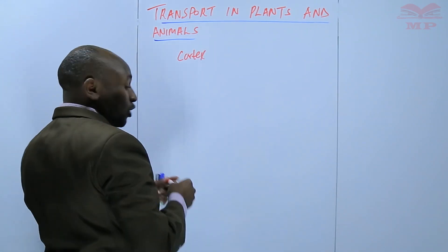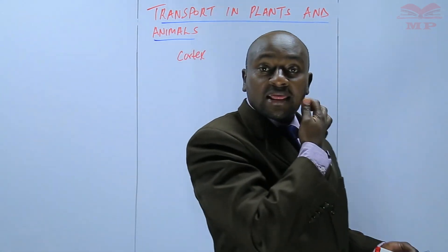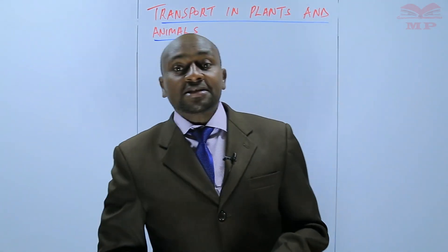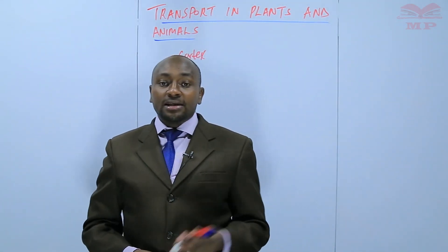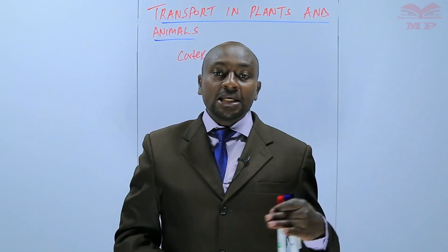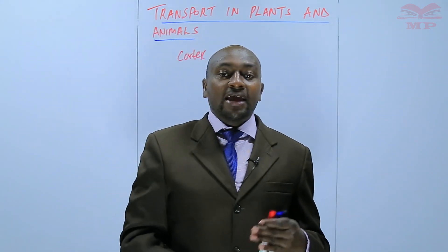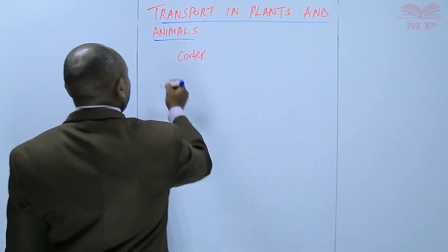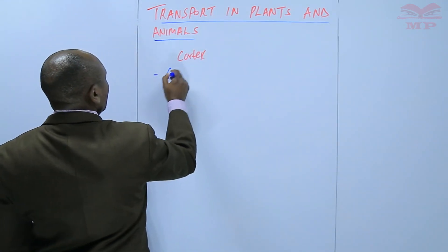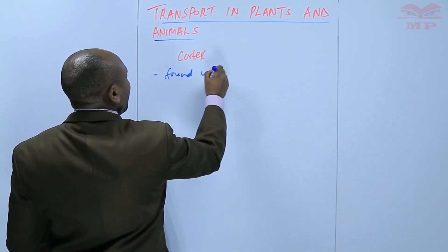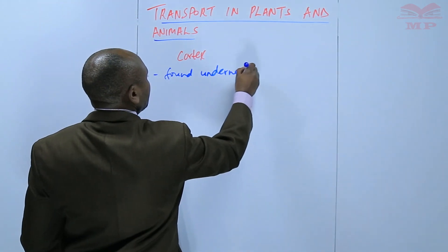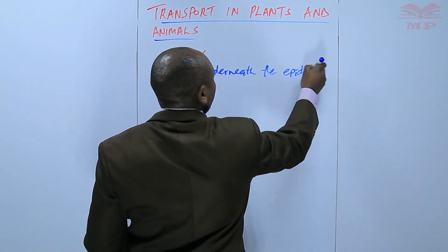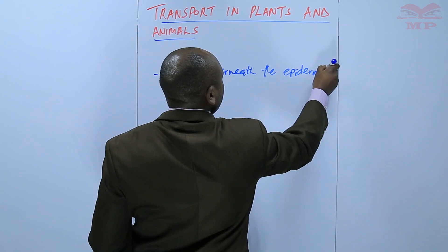The cortex is one of the tissues that is found in the roots. This particular tissue is found underneath the epidermis, just underneath the epidermis. So you can see that the cortex is found underneath the epidermis — that is its position.